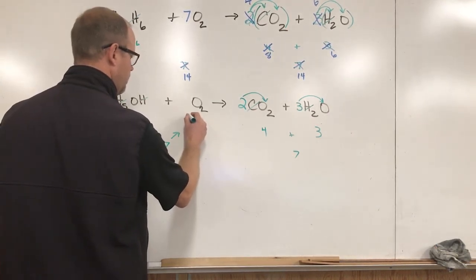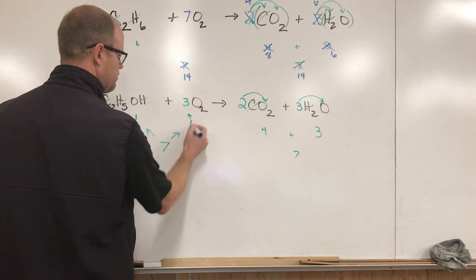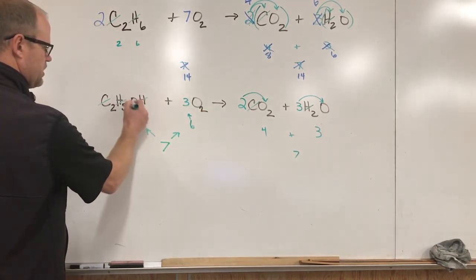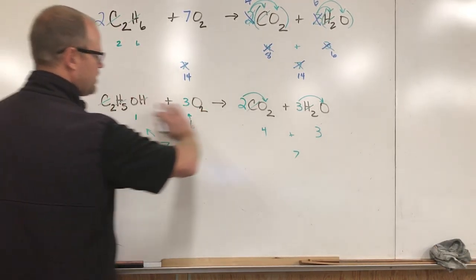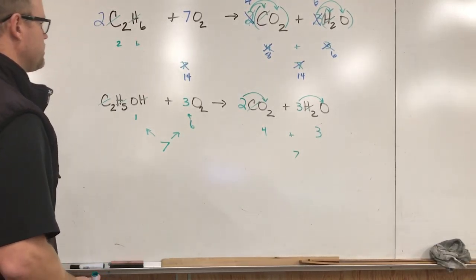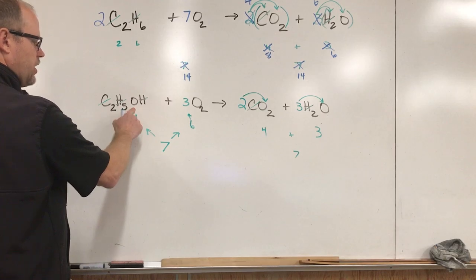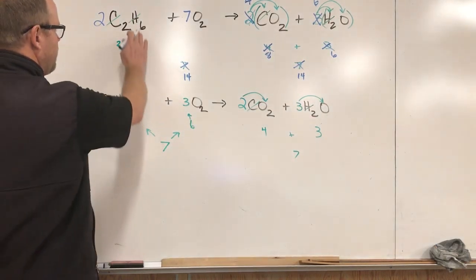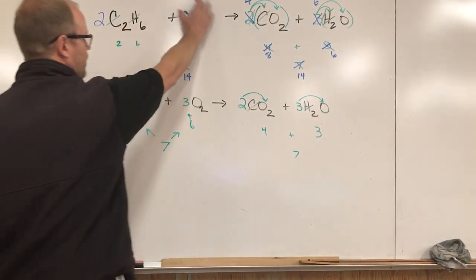If I put a three there, three times two gives me six. Six plus this one gives me seven and I didn't have to double everything to make this happen. But the reason why I didn't have to double everything is in this case I had an extra source of oxygen that I could work with in my combinations. Up here I didn't have that source of oxygen, it all had to come from here so I had no choice but to double everything.